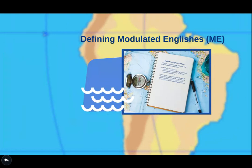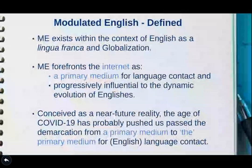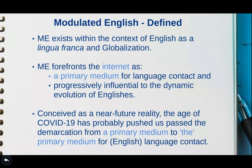First, let's define Modulated Englishes. Modulated Englishes exist within the context of English as a lingua franca and globalization. Modulated English foregrounds the internet as a primary medium for language contact and progressively influential to the dynamic evolution of Englishes. Originally conceived as a near-future reality, the age of COVID-19 has probably pushed us past the demarcation from a primary medium to the primary medium for English language contact.